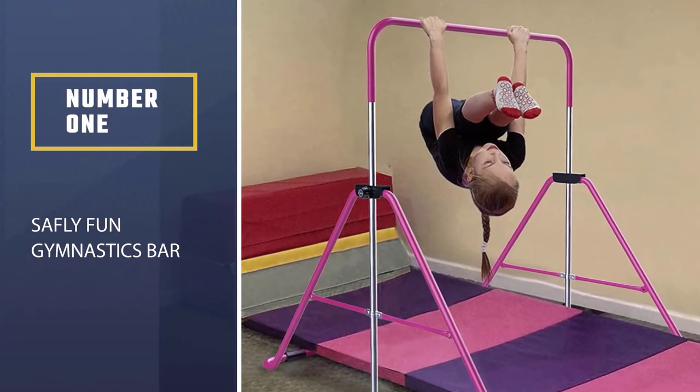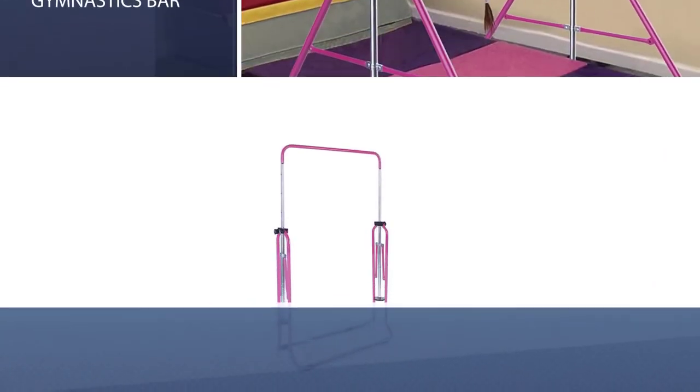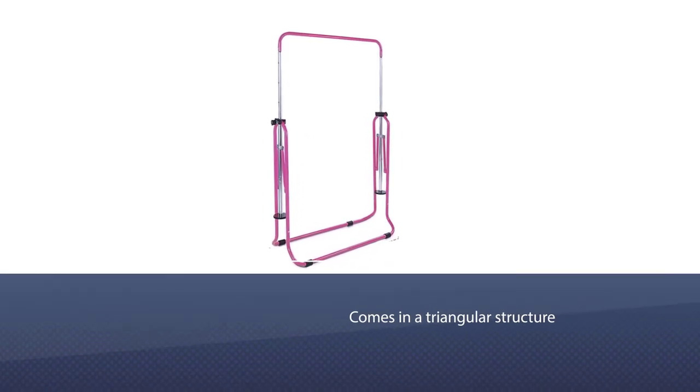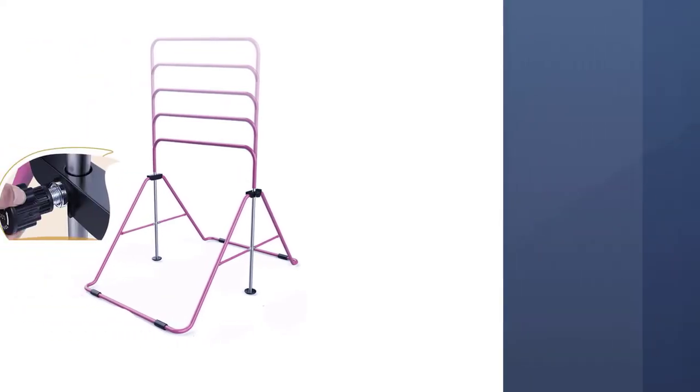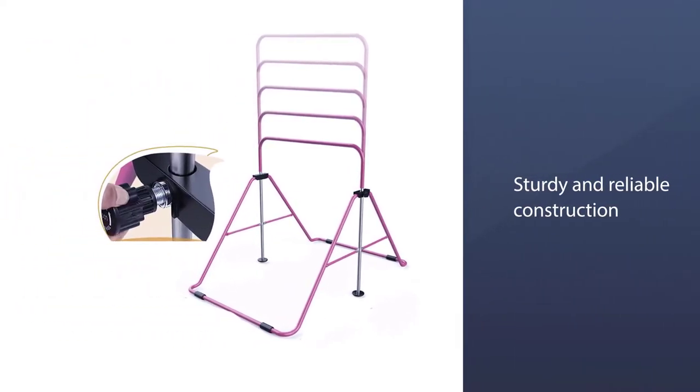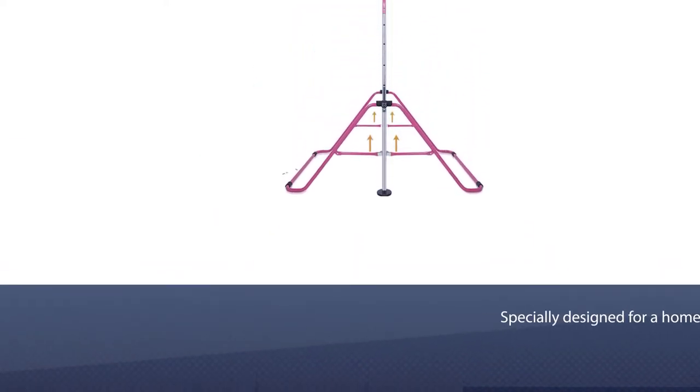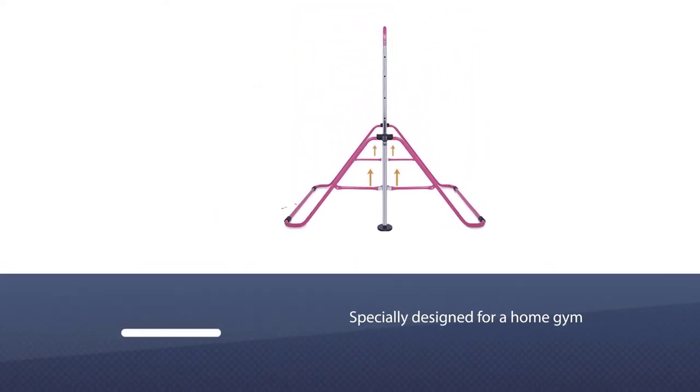Safely Fun Gymnastics Bar. This gymnastics safety bar comes in a triangular structure. Its sturdy and reliable construction is specially designed for a home gym. Therefore, it can easily be folded and placed at any place anytime. The bar is made up of a metal base which is durable and adjustable.